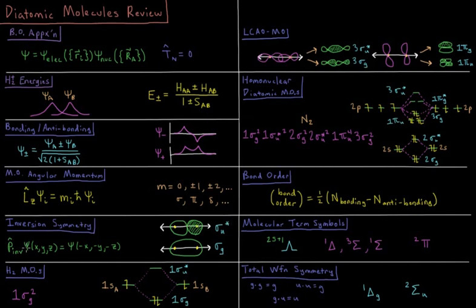The inversion operator acting on our wave function is either going to give an eigenvalue of plus or minus 1, plus 1 for gerade, and minus 1 for ungerade.